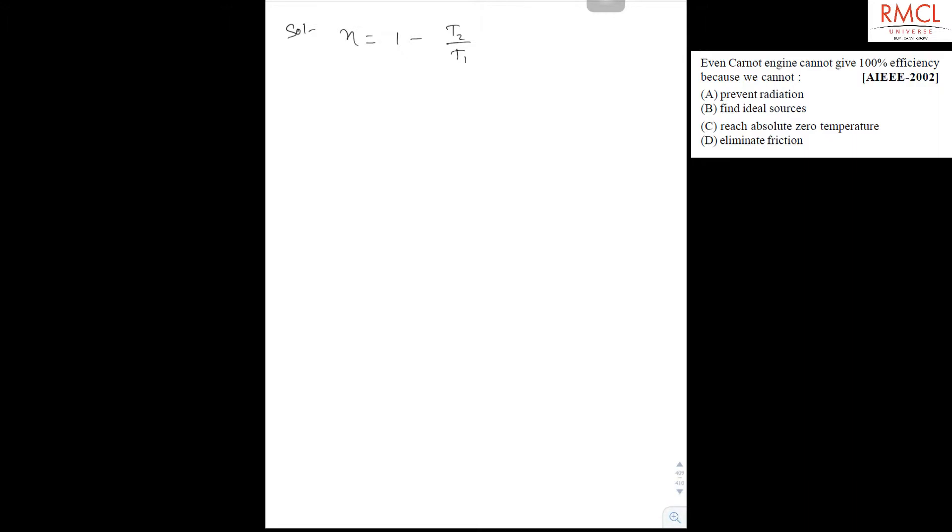So we also know T2 upon T1 is equal to Q2 upon Q1. So efficiency is equal to 1 minus Q2 upon Q1.